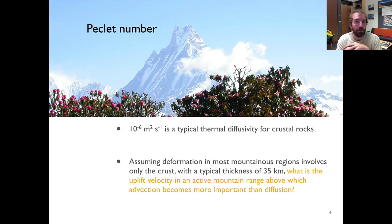Now you have an opportunity to make a calculation with the Peclet number and see if you understand the basic idea. Here we're going to make the assumption that most deformation in mountainous regions occurs only in the crust. So if we assume a typical crustal thickness of 35 kilometers, the question for you is what is the advective uplift velocity that is needed in an active mountain range for advection to become more important than diffusion.